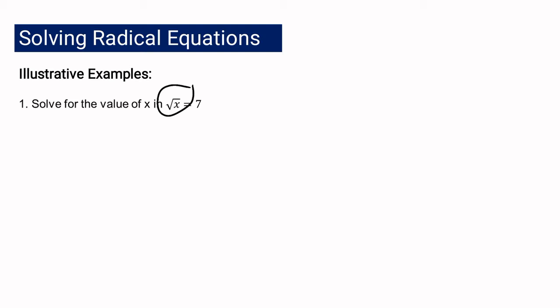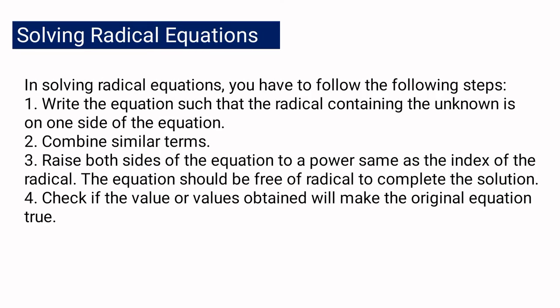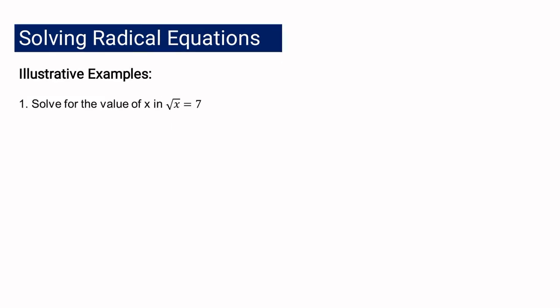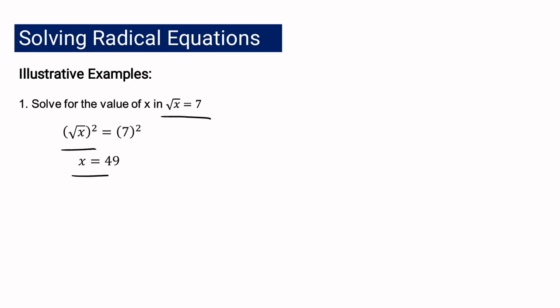Since the expression containing the unknown is already on one side of the equation and nothing needs to be simplified, we can proceed with step number 3. We need to raise both sides of the equation to the power equal to the index of the radical. In our given equation, the index is 2, so we are going to square both sides. Using the law of radicals, the radical cancels out, leaving x on the left, and 7 squared is 49 on the right. So x equals 49.